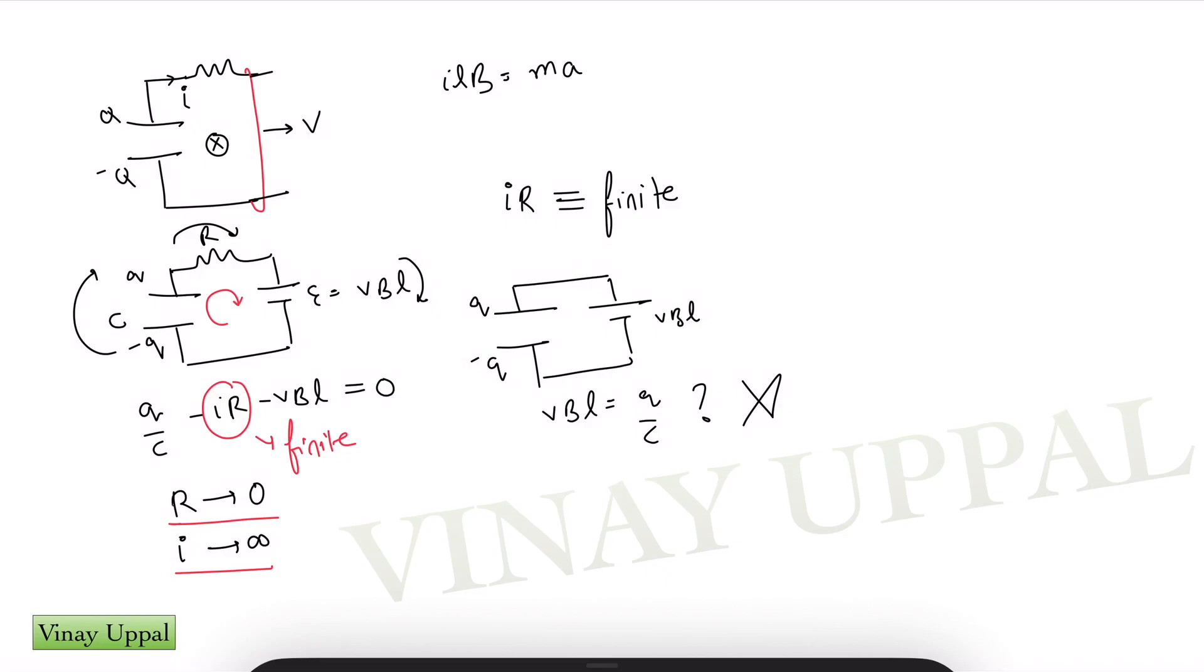And that is the resolution of the paradox. That is the catch. That is why V B L is equal to Q by C is not correct during the acceleration of the rod because you will be missing out on the term of I R. Even though you may not see a resistance in the circuit, the current is infinitely large enough such that the product of I into R is still finite.